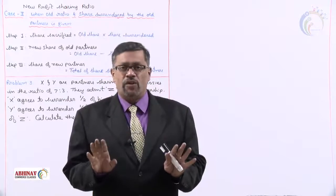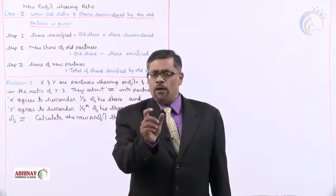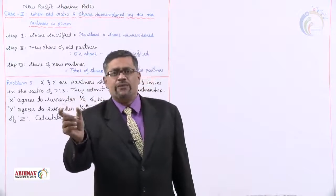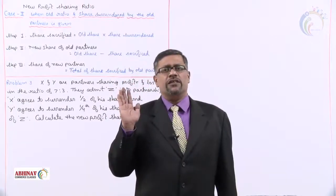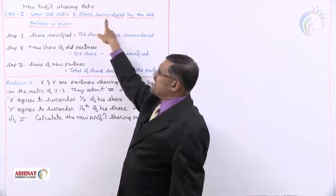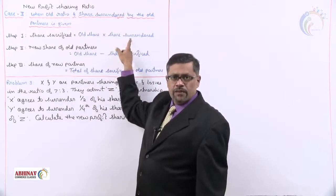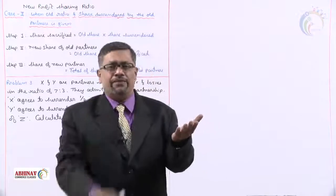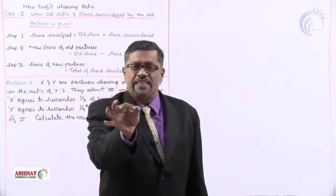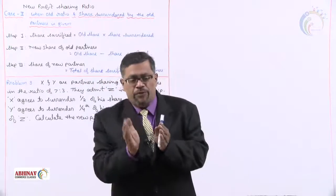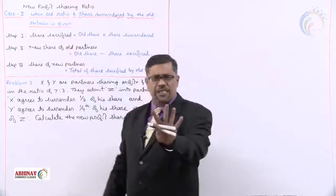Here, share sacrifice is not given — share surrendered is given. Sacrifice means whatever the share is, it will be multiplied with what they are sacrificing to give the answer. Share surrendered means they give us the sacrifice share before multiplying. For example, ten rupees is the share and he is sacrificing half, so ten into half equals five — that five rupees is called share sacrifice, and the half is called share surrendered. In short, the share before multiplying with old ratio is called share surrendered; when you multiply it, it becomes share sacrificed.